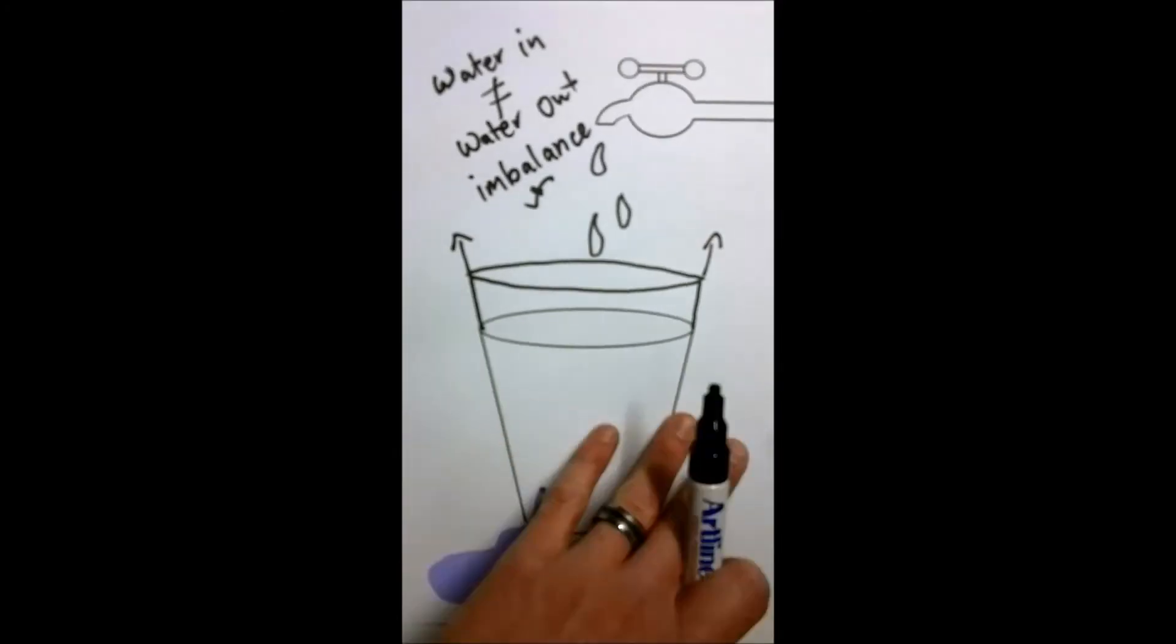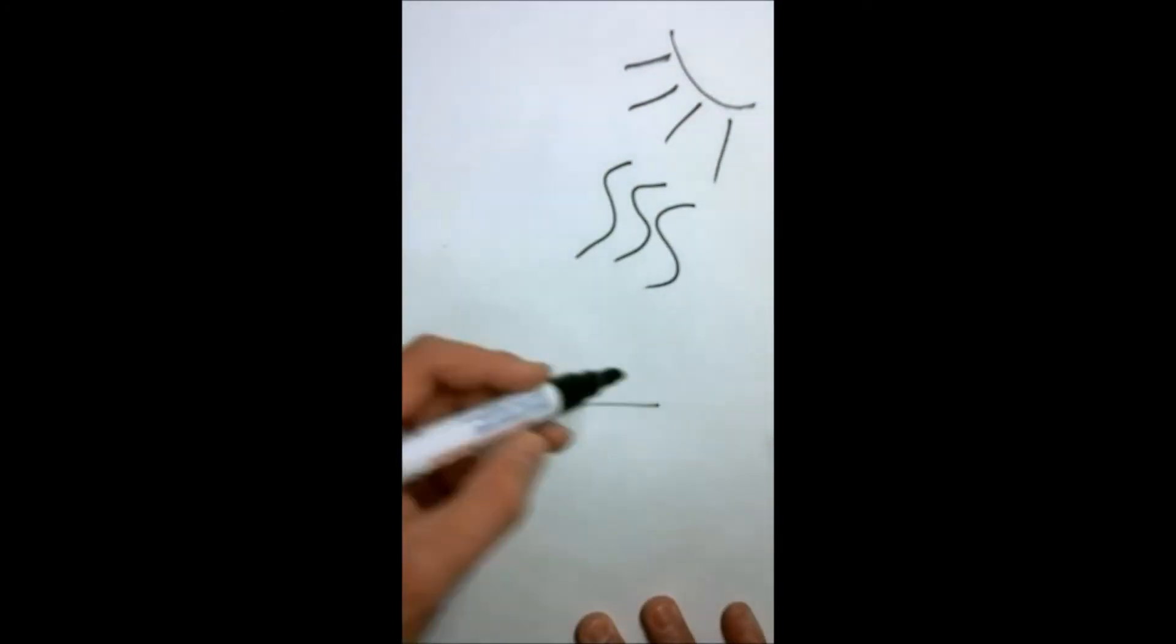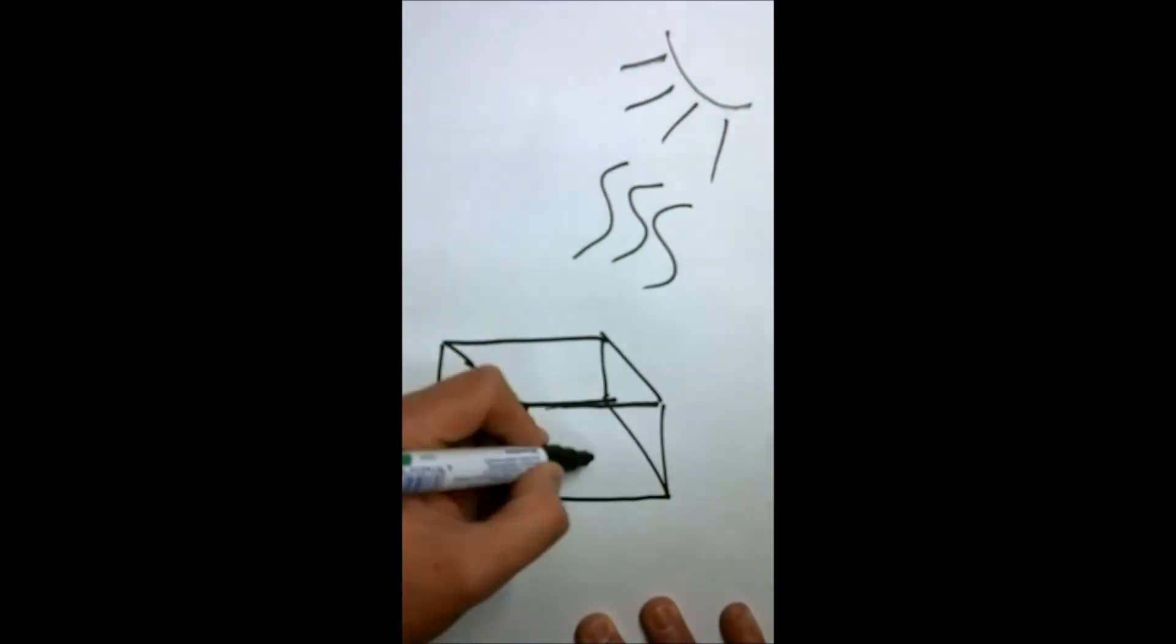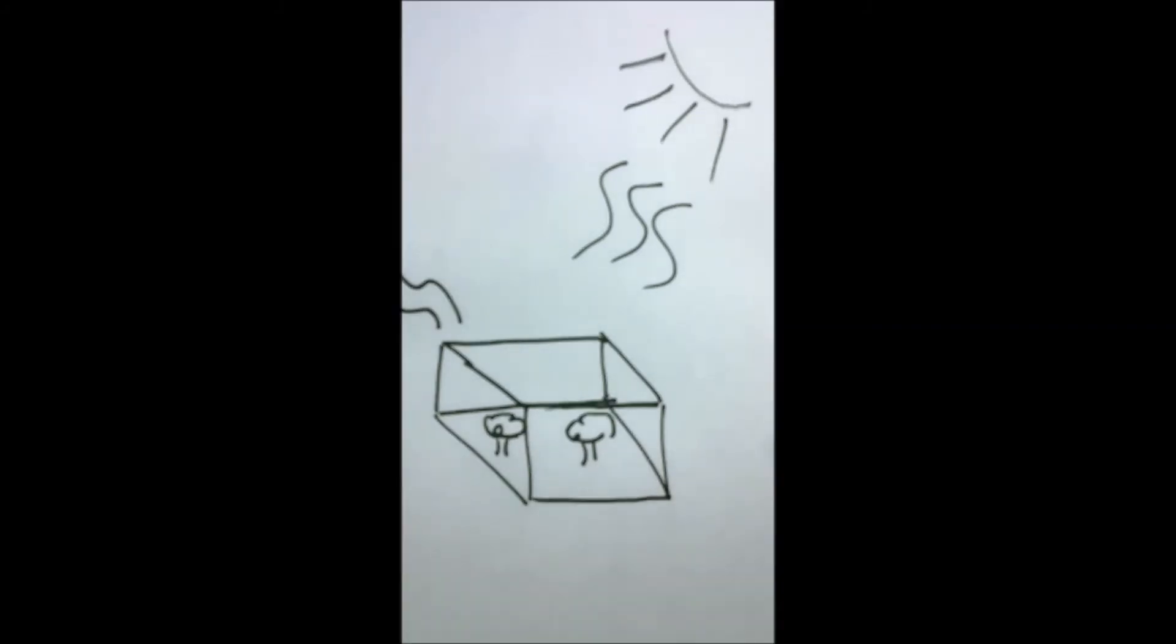In a basic sense this is the greenhouse effect, but the faucet is the Sun, instead of water we have energy, and the reservoir is our atmosphere filled with greenhouse gases.